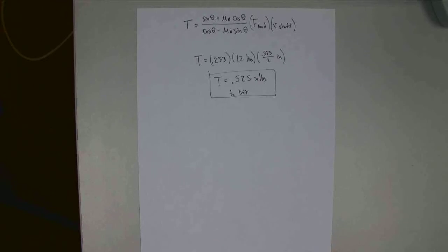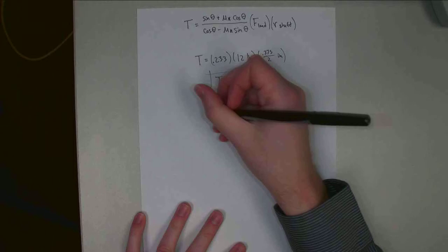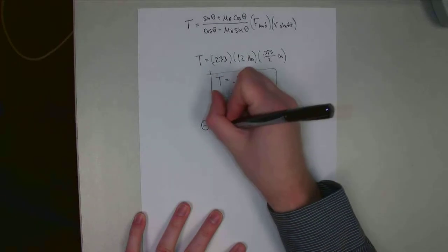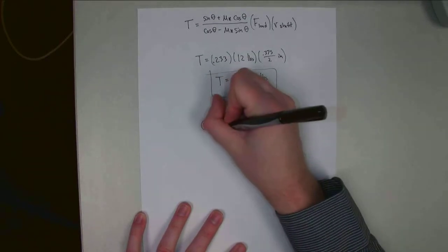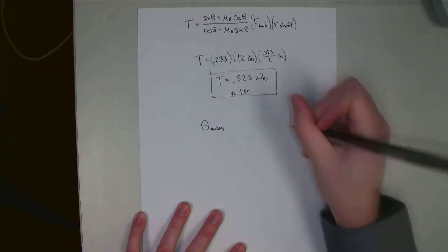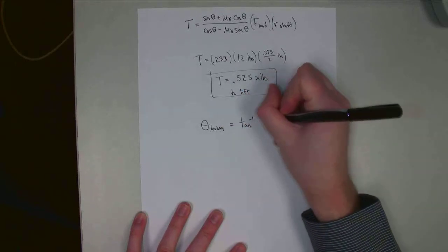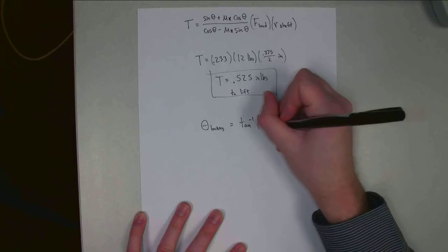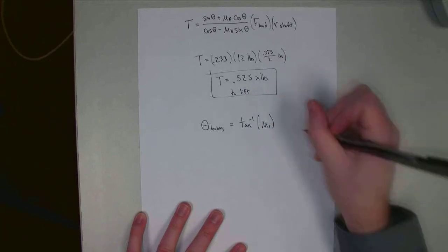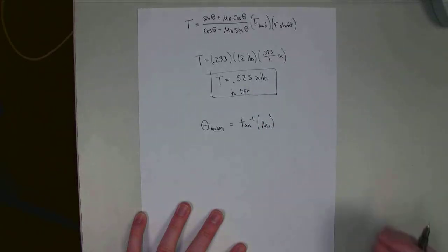To determine what happens if we remove the load, we need to determine the self-locking angle. Theta locking for any system equals the arc tangent of the static coefficient of friction between the bolt material and the nut material.